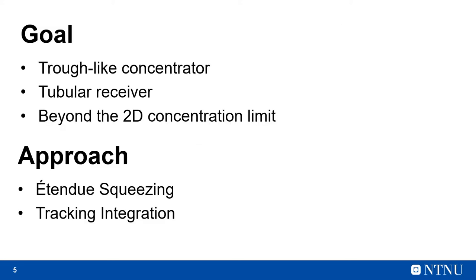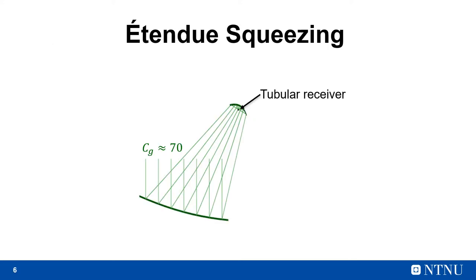Our goal is to create a trough-like solar concentrator designed for tubular receivers that is able to concentrate beyond this two-dimensional limit. To do that, we combine the idea of étendue squeezing with the idea of tracking integration. So how can this be done?